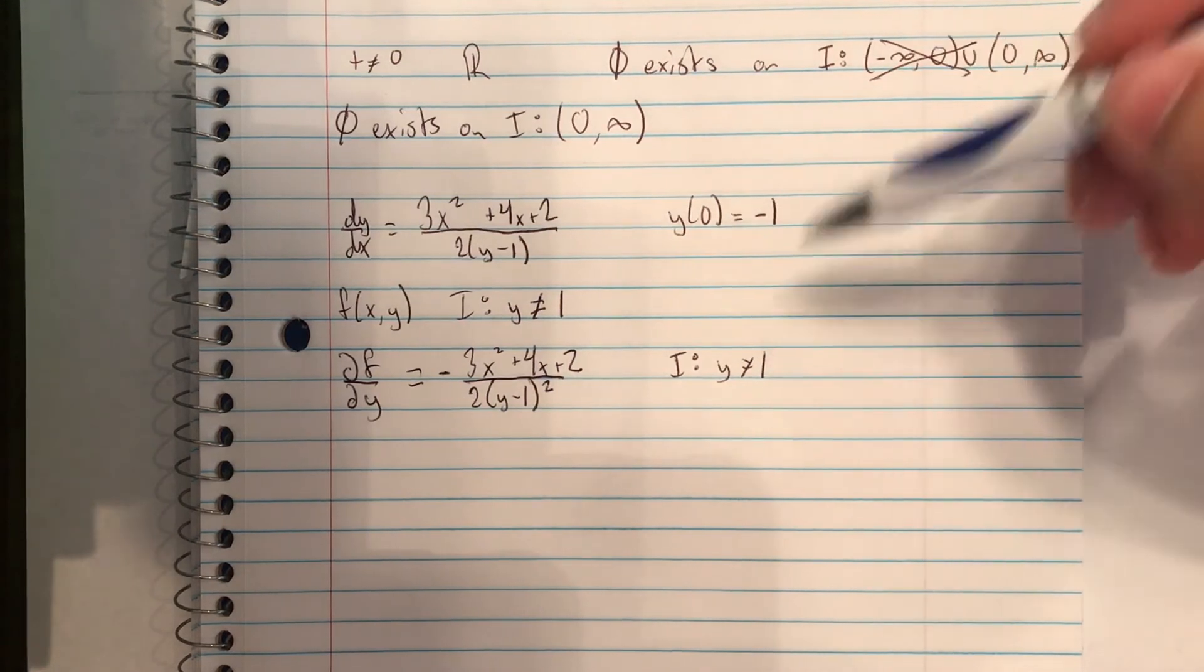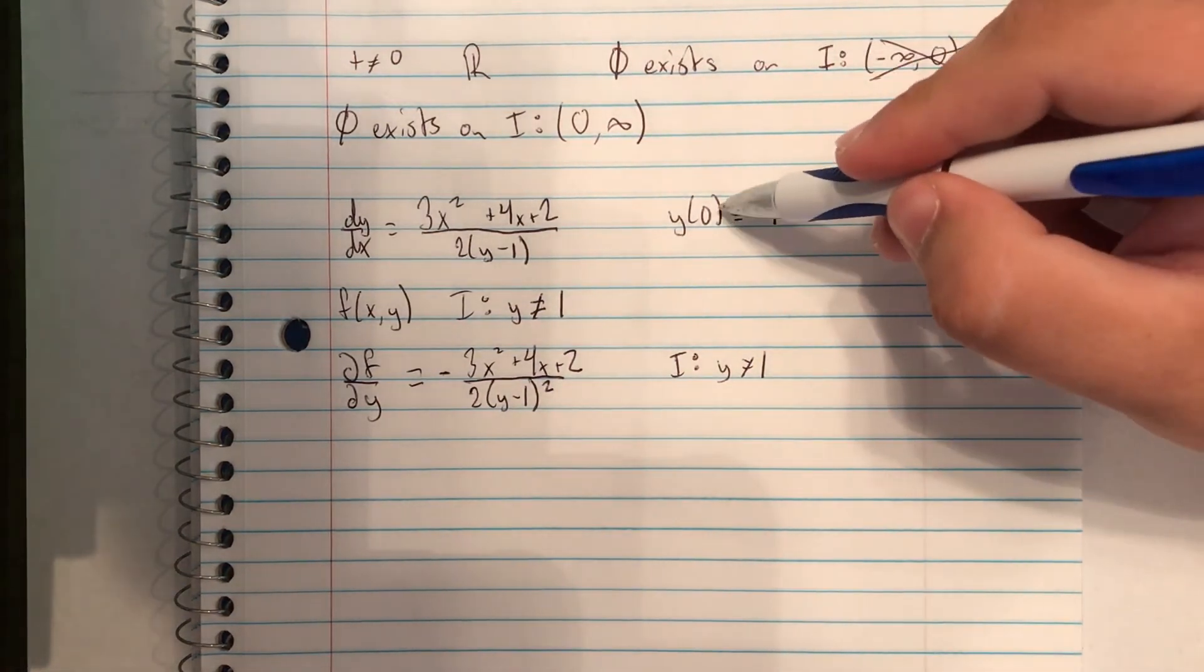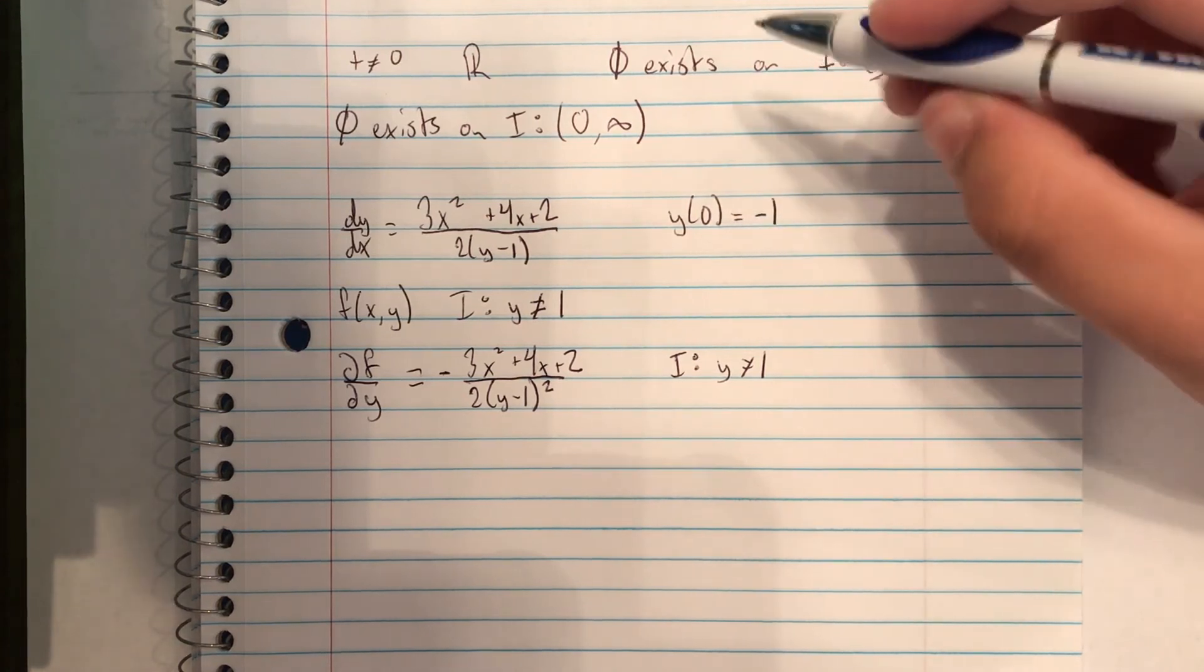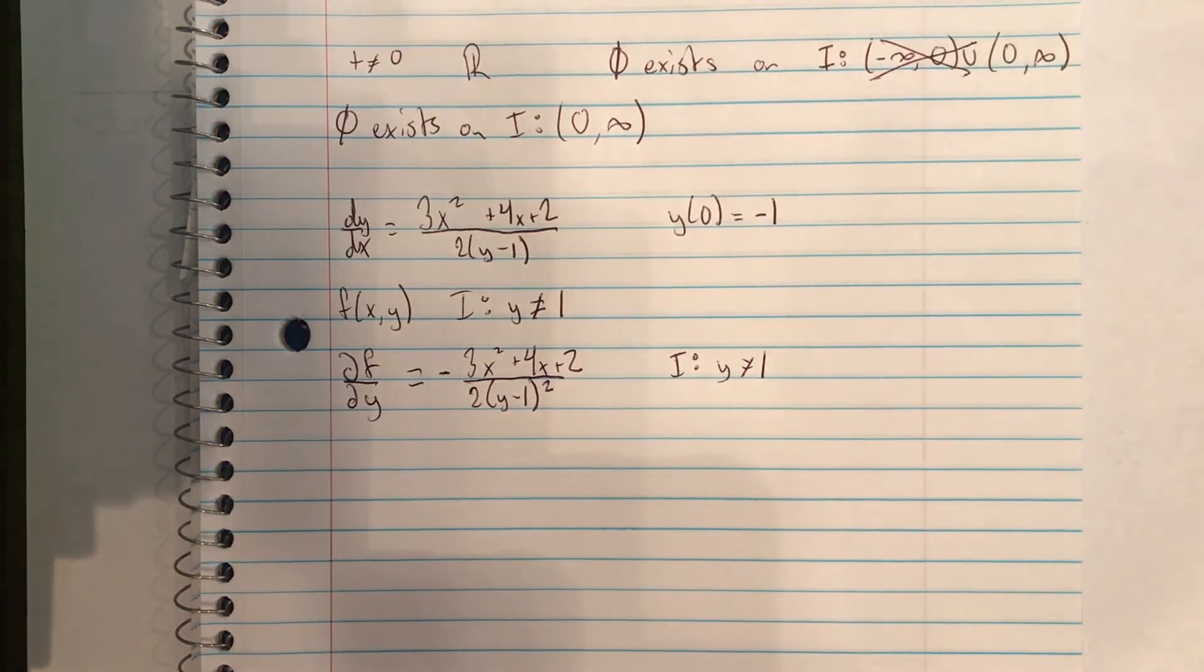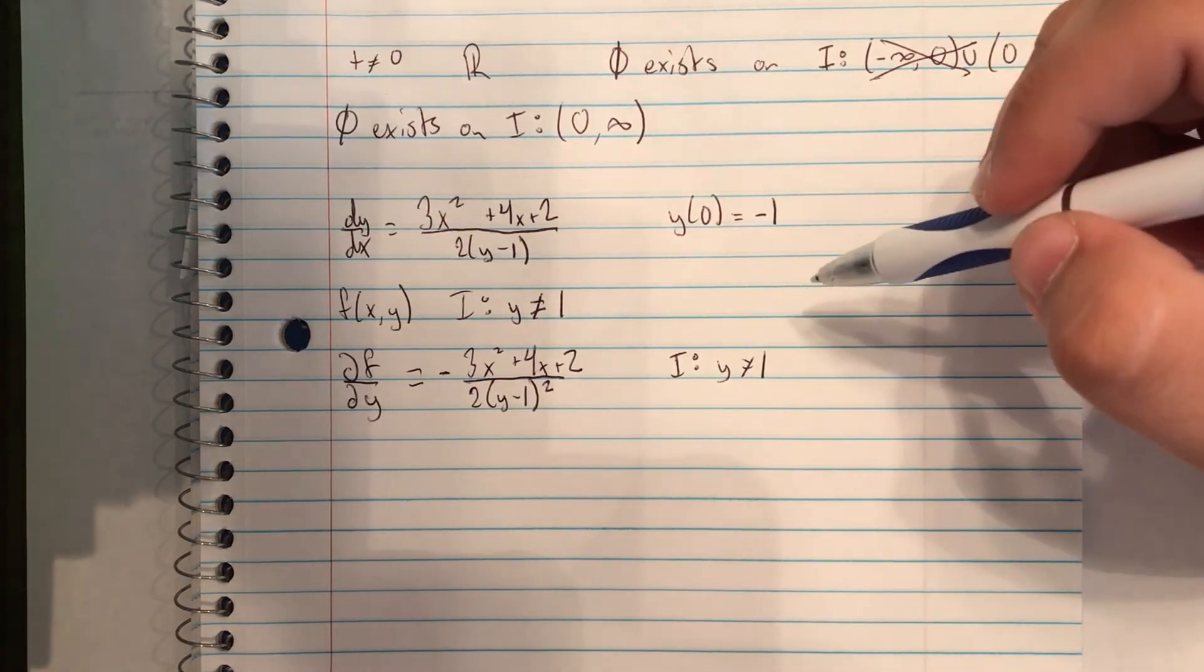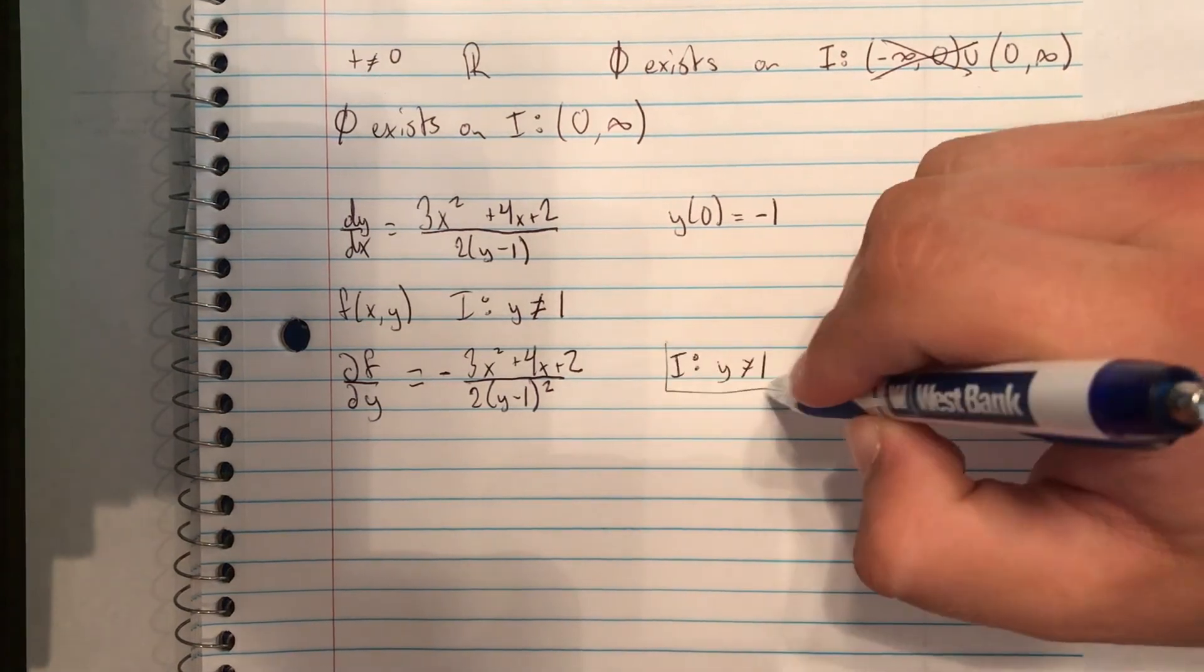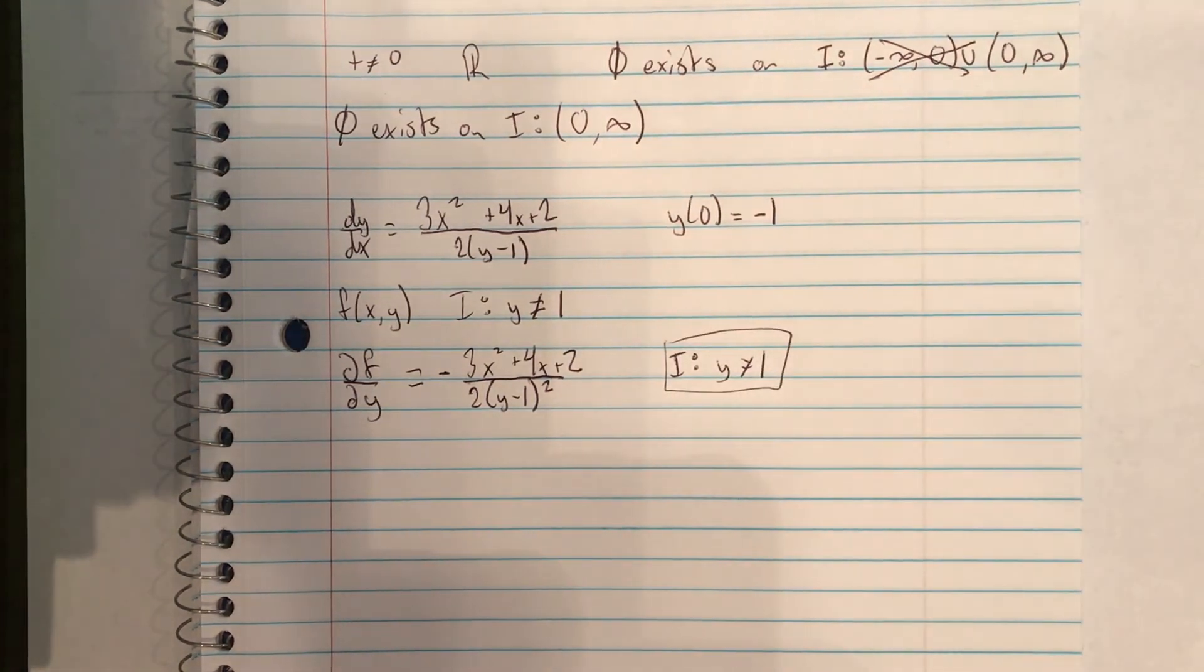Now, these two are the same. And because of theorem 2.4.2, we can start off at this point. And we can make any rectangle as long as it doesn't contain any solution that y is equal to 1. So we can't really write anything down.